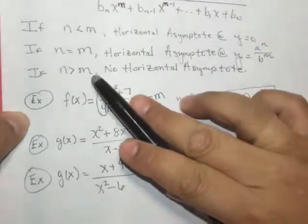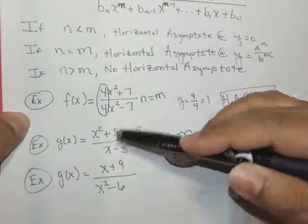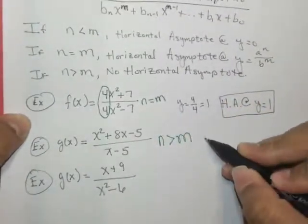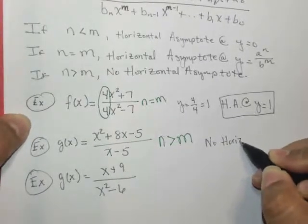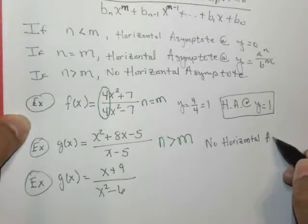And what does it say for n greater than m? Because this is n is 2 and m is 1. n greater than m says there is no horizontal asymptote. I'm going to write that down. So we have no horizontal asymptote.